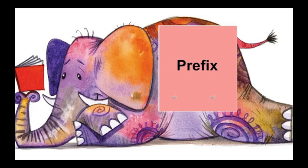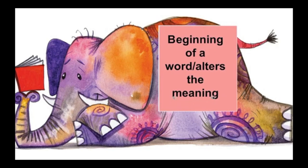We're going to start with a reminder of what prefixes are. A prefix comes at the beginning of a word and alters its meaning. An example of a prefix would be pre-, which is used to tell you that something happens before something else. If you need a review, go back and look in a former unit to find more examples of prefixes.